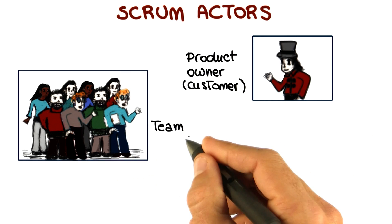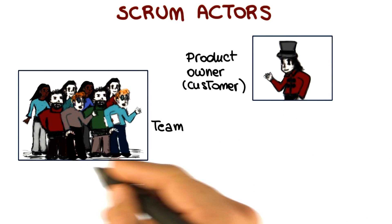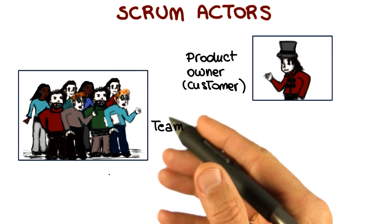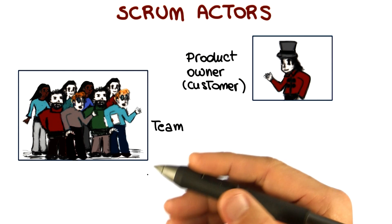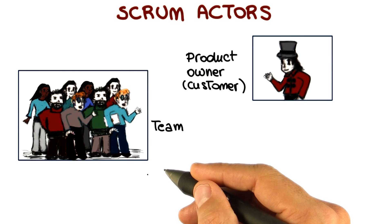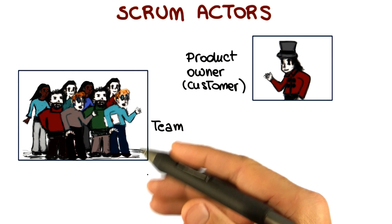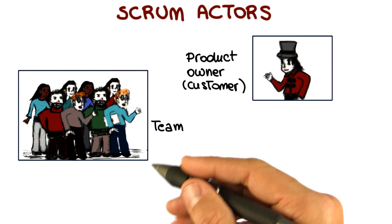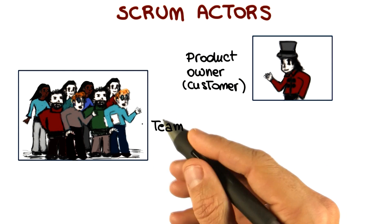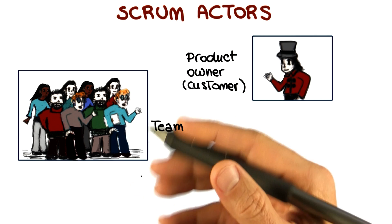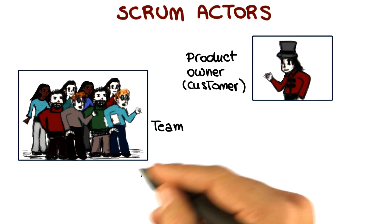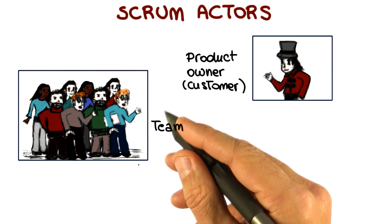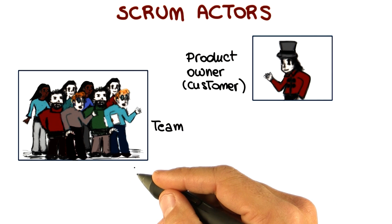The second actor is the team. The team is responsible for delivering shippable increments, to estimate the backlog items. It is normally self-organized, consists of four to nine people, and is what you would consider normally as the main development team in a project.